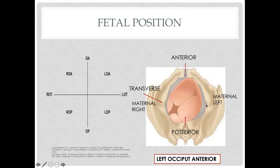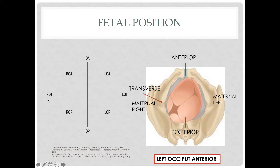We have four quadrants: anterior — where the symphysis pubis is — posterior where the sacrum is, maternal left, and maternal right. Since this fetus is in an occiput presentation, our marker will be the occipital or posterior fontanel. If the posterior fontanel is directed towards the left anterior quadrant, the fetal position is left occiput anterior. If directed to the left lateral area, that is left occiput transverse. Pointing posteriorly and left is left occiput posterior. The remaining positions are occiput posterior, right occiput posterior, right occiput transverse, right occiput anterior, and occiput anterior.